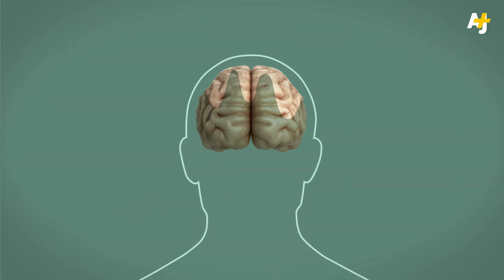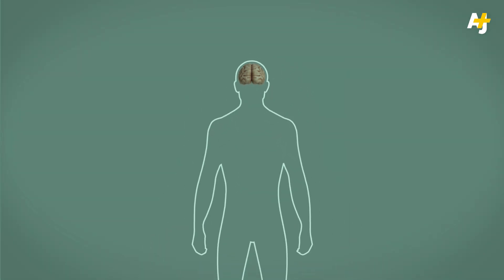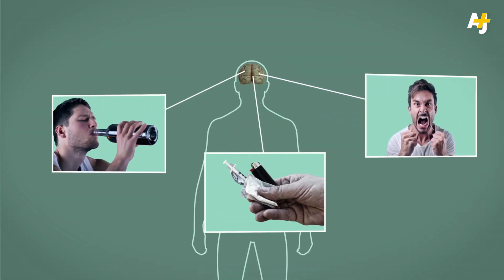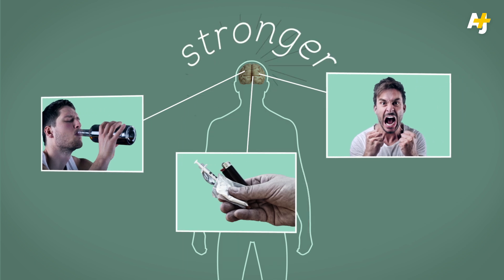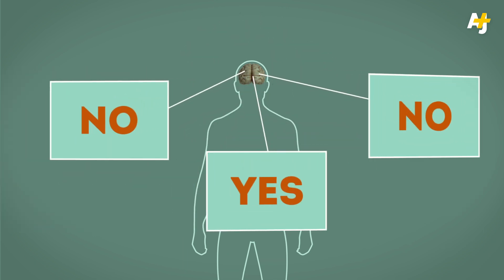Over time, drug use can also change other parts of the brain. Some connections, like the ones related to impulsive behavior and emotional responses, get stronger. And others, like those used in decision making, get weaker.